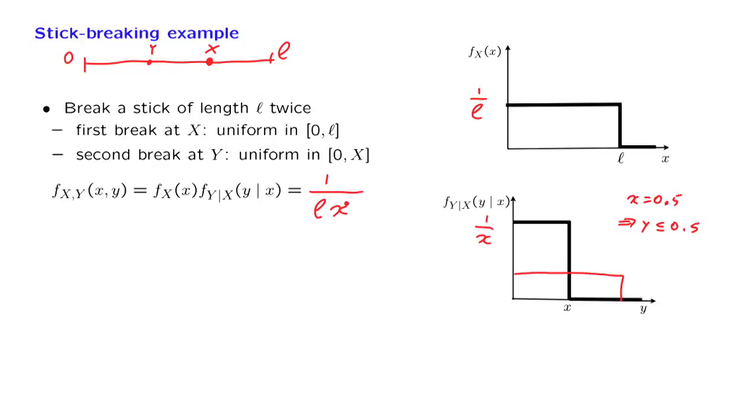But for which values of X and Y is this the correct expression? It is correct only for those values that are possible. So 0 has to be less than Y less than X less than L. This is the range of values that are possible in this particular experiment. And we can visualize those values. They are those that correspond to this shaded triangle here. X and Y are less than or equal to L, and Y has to be less than or equal to X.